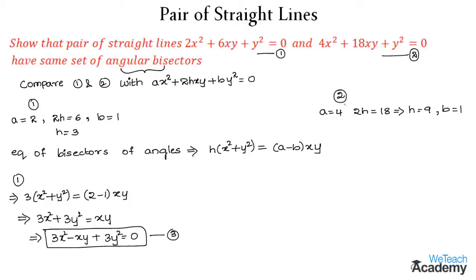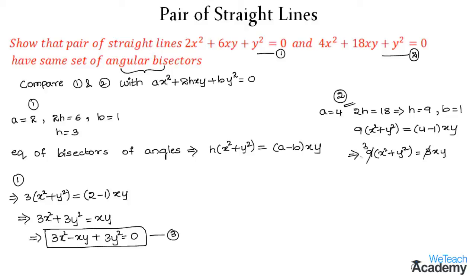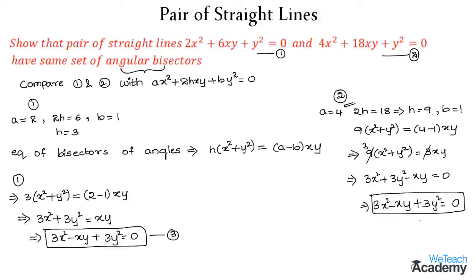Now let us find the equation of bisectors for equation 2 using the same formula. We get 9(x² + y²) = (4 − 1)xy, which gives 9(x² + y²) = 3xy. Dividing through by 3, we get 3x² + 3y² − xy = 0, which can be written as 3x² − xy + 3y² = 0. This is the pair of angular bisectors for equation 2.